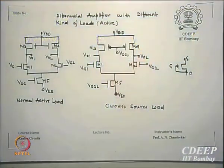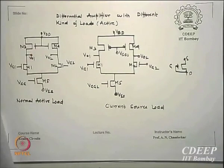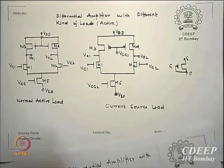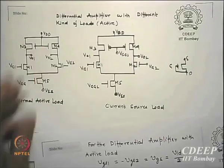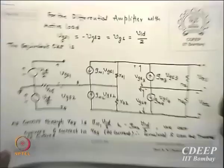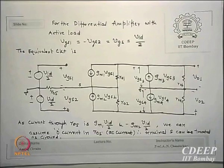We were doing differential amplifier and have already looked into the small signal analysis. Today we shall see some of the active loads, different kinds of loads which a differential amplifier can have, and how we calculate the difference gain and the common mode gain. The first one I am going to calculate is a normal active load in which M3 and M4 are in saturation — their gates are N-channel, but they can also be P-channels for this differential amplifier.